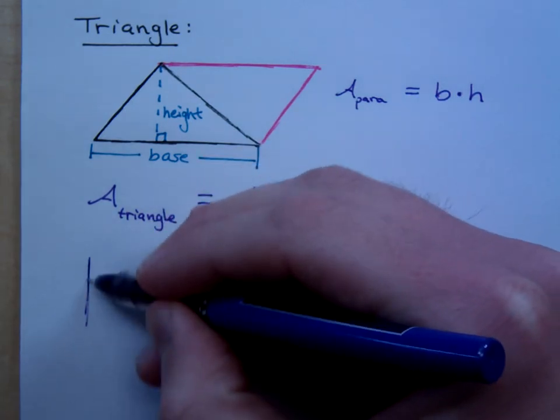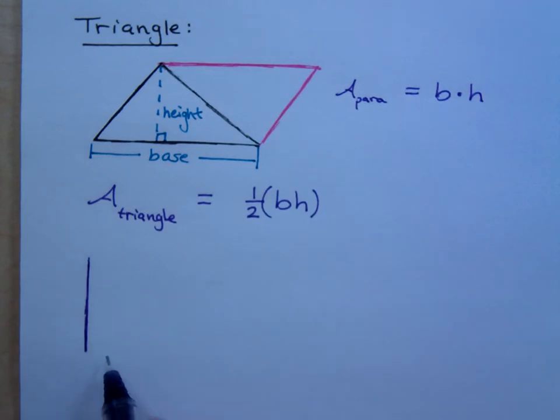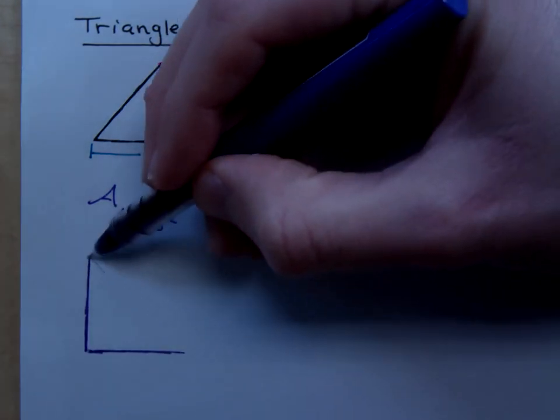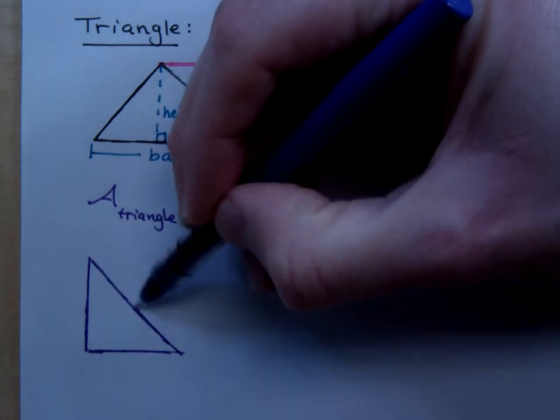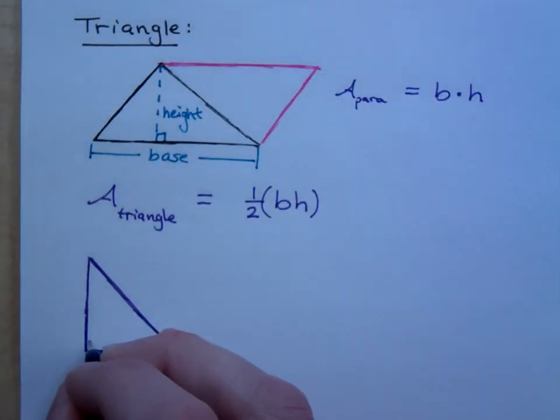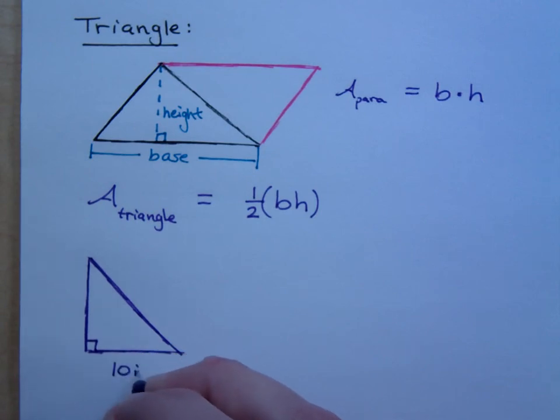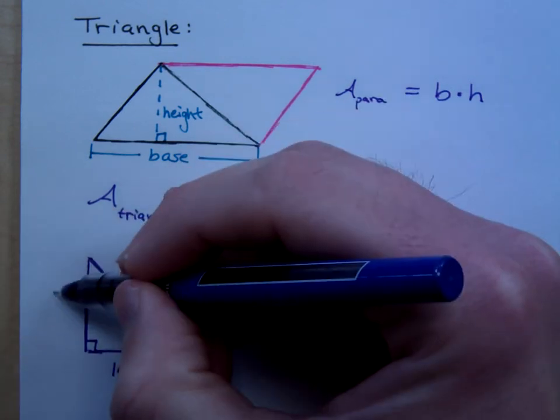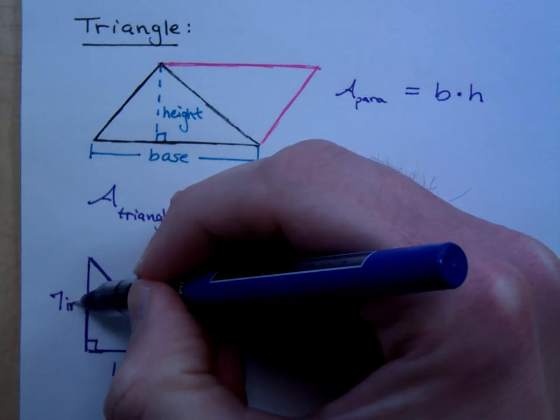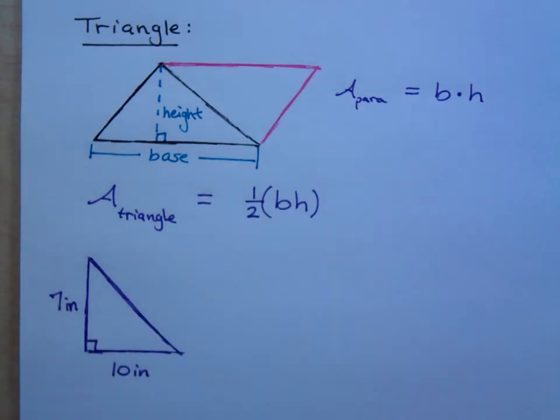So, if I were to simply draw this triangle. And I said that the base here is 10 inches, and the height is 7 inches. Could you find the area?